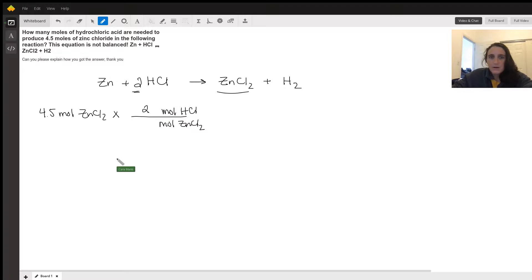of HCl and one mole of zinc chloride. This cancels our moles of zinc chloride, leaves us with moles of HCl, and we multiply those numbers to give us nine moles of HCl.